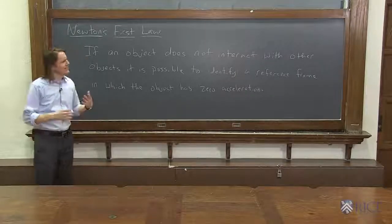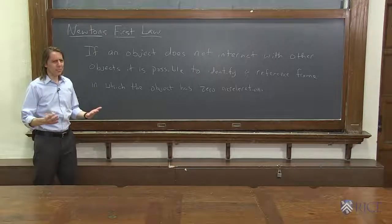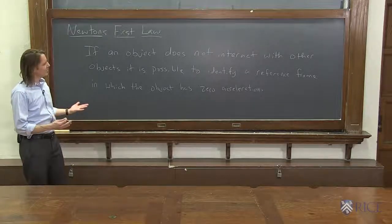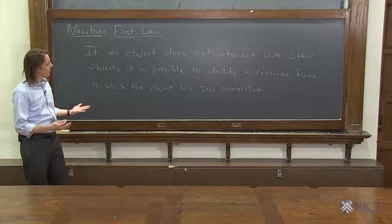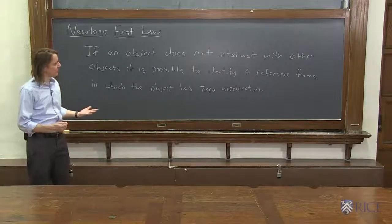So Newton's first law, often you'll find it in a book and it kind of sounds really weird, like if an object does not interact with other objects, it is possible to identify a reference frame in which the object has zero acceleration.